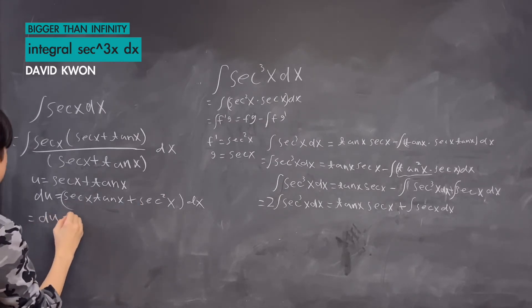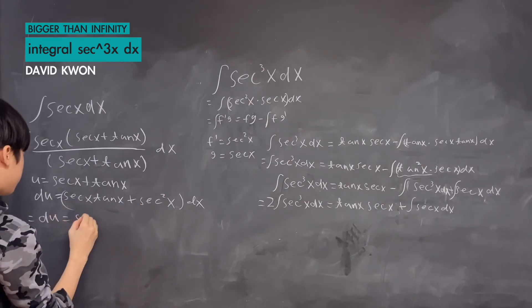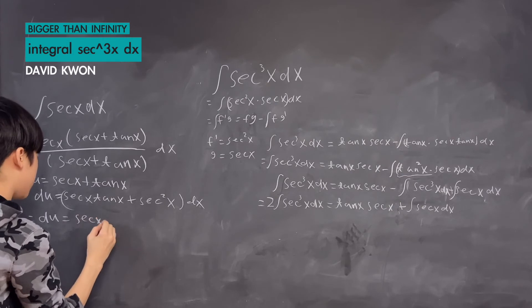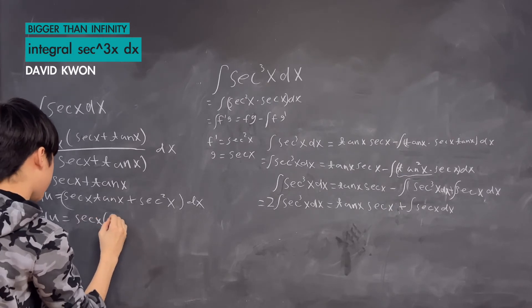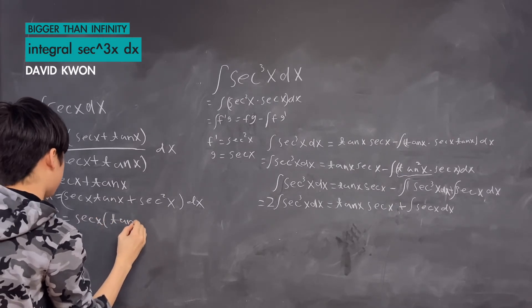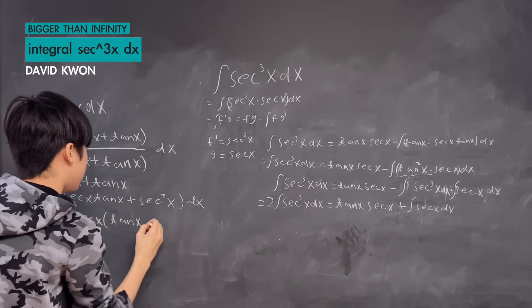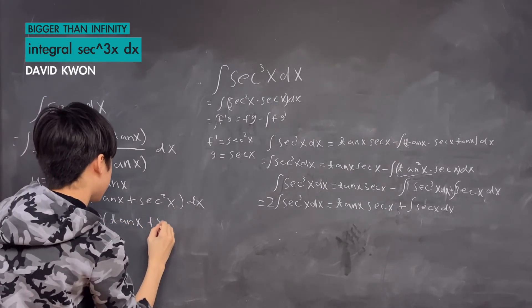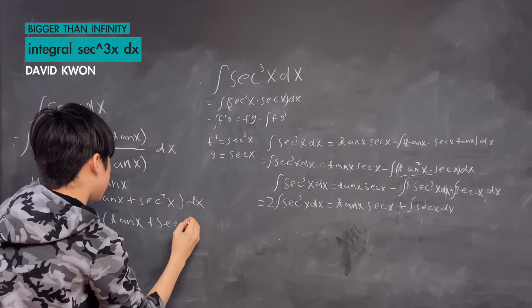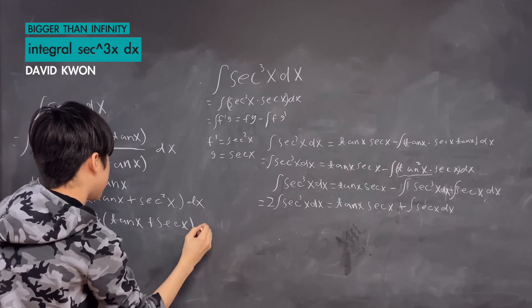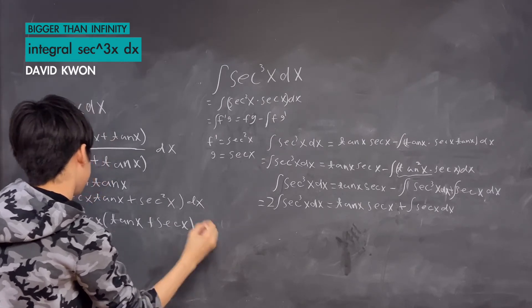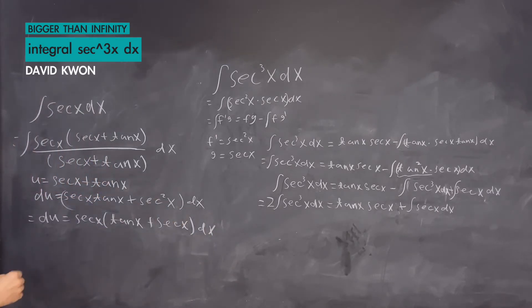Differentiating u, we get du equal to secant x times tangent x plus secant squared x dx. So we have du equal to secant x times the quantity tangent x plus secant x, all times dx.